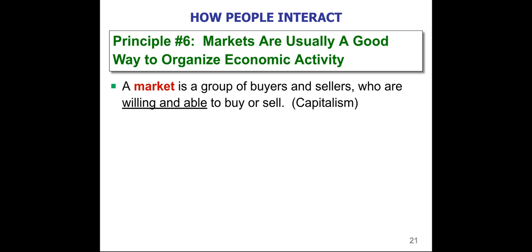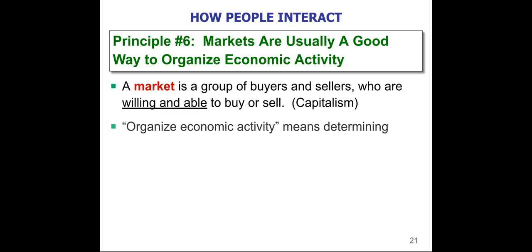A market is not just any buyers and sellers — these are people that are both willing and able to buy or sell. There are lots of times that we really want something, but if we're not physically able to purchase it — we don't have enough money, or it's not the right time to buy a house — we're not really in the market. Markets are the basic system of free markets, or what we call capitalism, where we let buyers and sellers organize all of the economic activity.